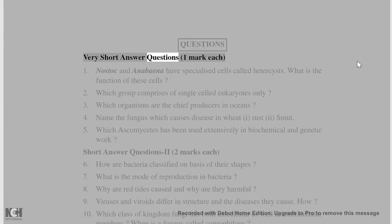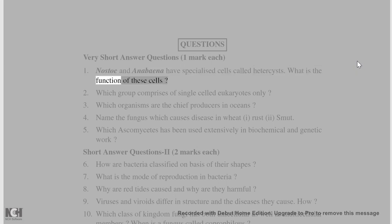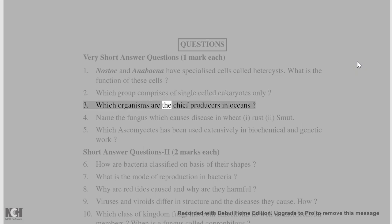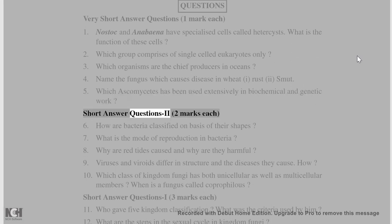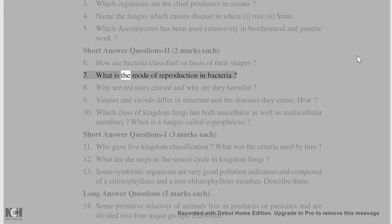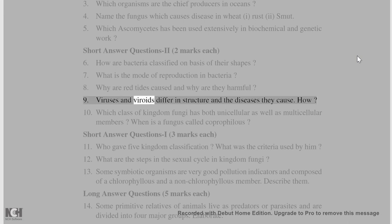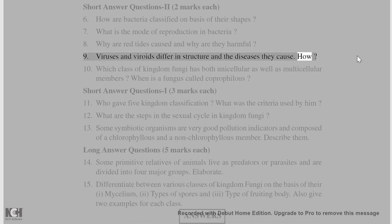Very short answer questions (1 mark each): 1. Nostoc and Anabaena have specialized cells called heterocysts — what is their function? 2. Which group comprises only single-celled eukaryotes? 3. Which organisms are the chief producers in oceans? 4. Name the fungus causing rust and smut in wheat. 5. Which Ascomycetes has been used extensively in biochemical and genetic work? Short answer questions (2 marks each): 6. How are bacteria classified by shape? 7. Mode of reproduction in bacteria? 8. Why are red tides caused and why are they harmful? 9. How do viruses and viroids differ in structure and diseases caused? 10. Which class of Kingdom Fungi has both unicellular and multicellular members?